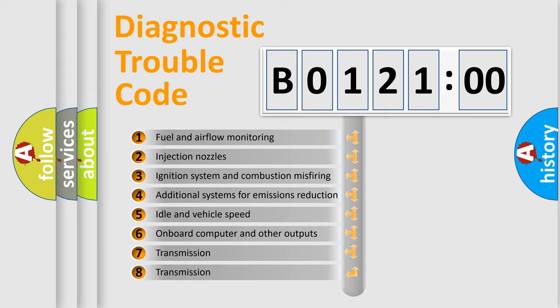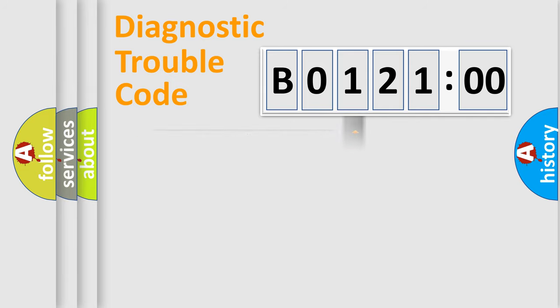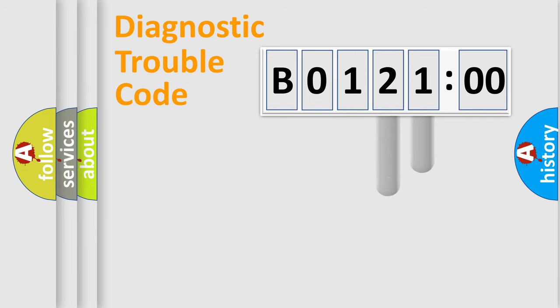The third character specifies a subset of errors. The distribution shown is valid only for the standardized DTC code. Only the last two characters define the specific fault of the group.